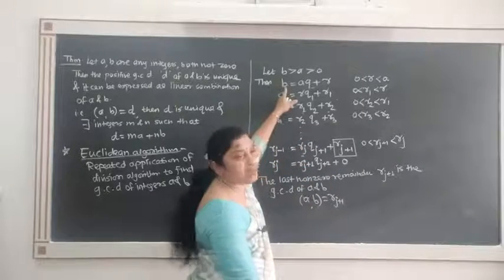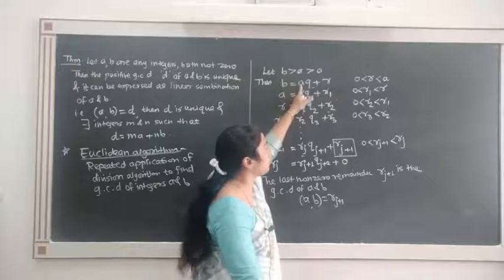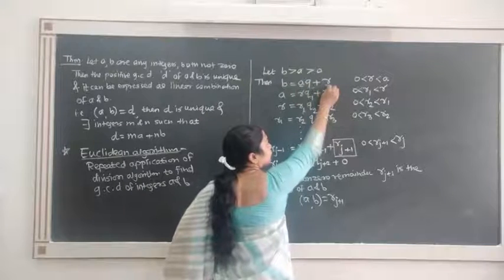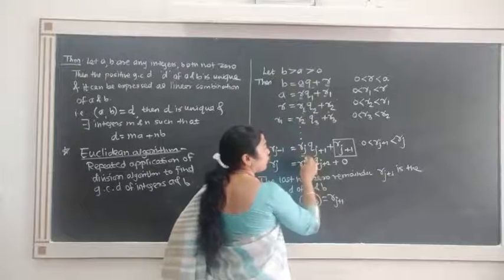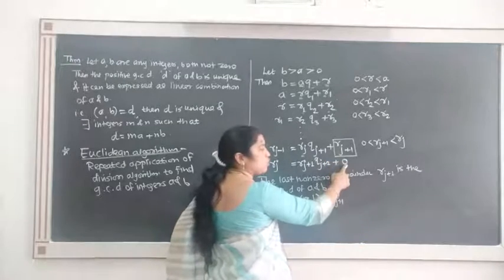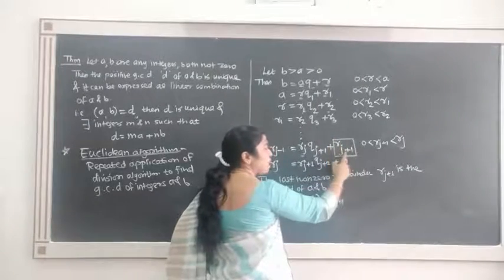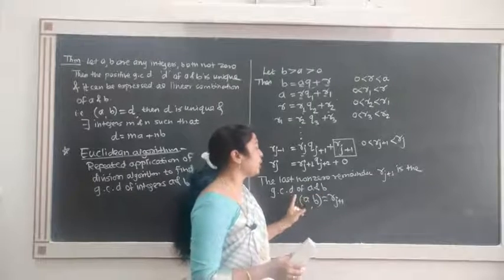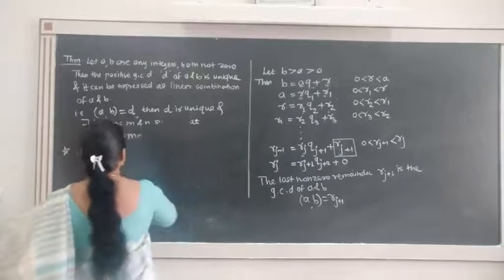So observe: every time we apply the division algorithm to successive remainders. We apply it to A and B, get quotient and remainder; then to A and R; then to R and R₁, and so on. At some step we get remainder 0, and the last non-zero remainder is the greatest common divisor. Consider one example to get the idea clear.